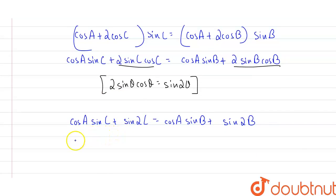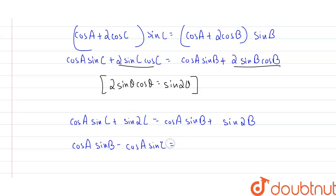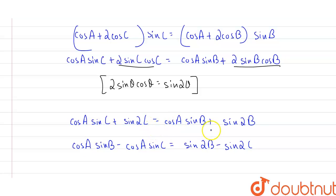Rearranging the equation, I bring all terms to one side: cosA·sinB - cosA·sinC = sin2C - sin2B, which can be written as cosA(sinB - sinC) = sin2C - sin2B. This equals zero.